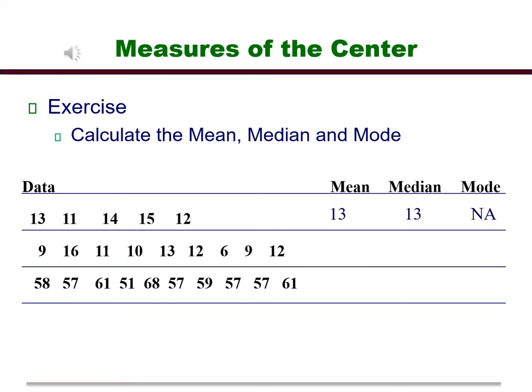The answer for line one: the mean is 13, the median is 13, and there is no mode. The NA is just an indicator that there is no mode.